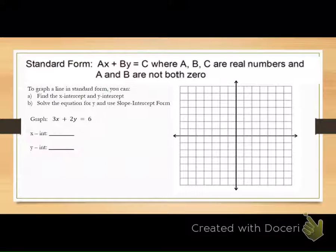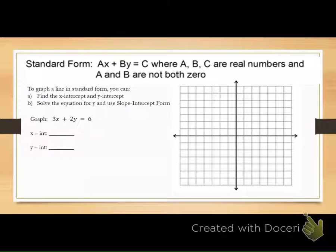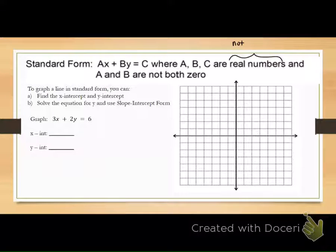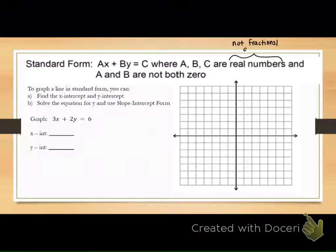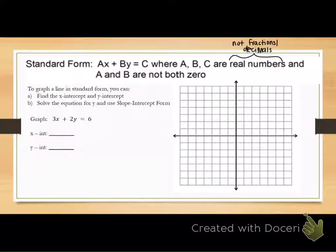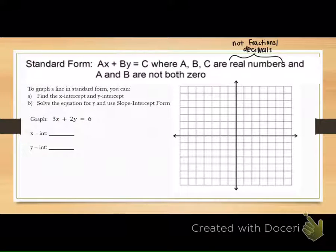Let's start with the new one. Standard form is ax plus by equals c, where a, b, and c are real numbers — which in this context means they are not fractions or decimals. And a and b are both not zero.